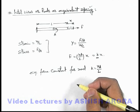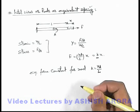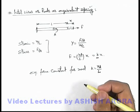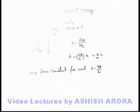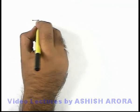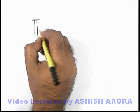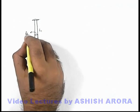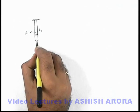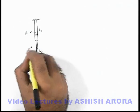Similar to that, we can also analyze spring combinations when some springs are combined, and find the equivalent constant. In continuation, consider a system where there is a rod having length L1 and cross-sectional area A1, connected in series with another rod of length L2 and cross-sectional area A2.